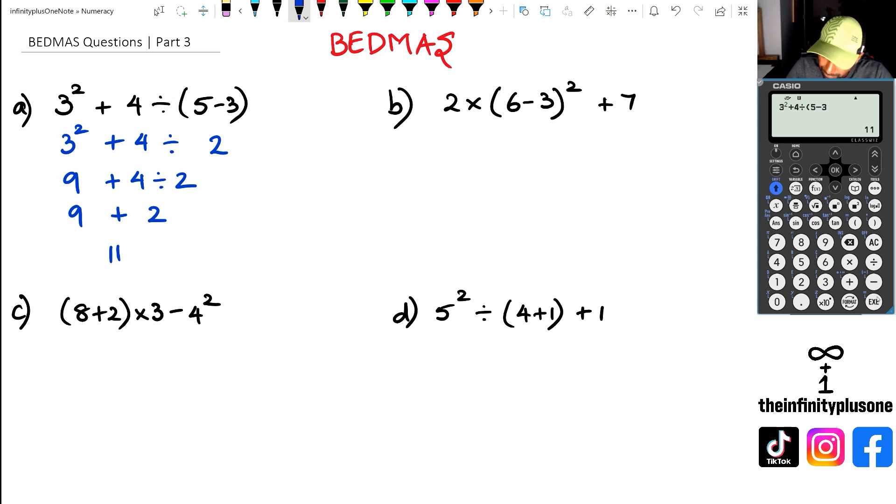Going to question B, we've got to do the brackets first. When we do the brackets first, we've got six take away three, which is three, and it's going to give us three squared. Then we've got to work out what three squared is. Three times three is nine. So we've got two times nine plus seven. Then we do the multiplication. Nine times two is eighteen. So we're going to get eighteen plus seven, which equals twenty-five.